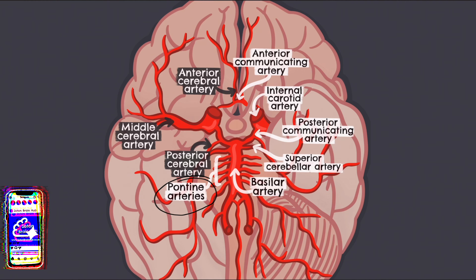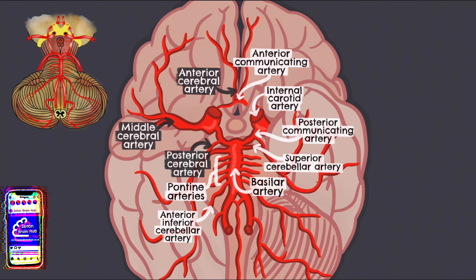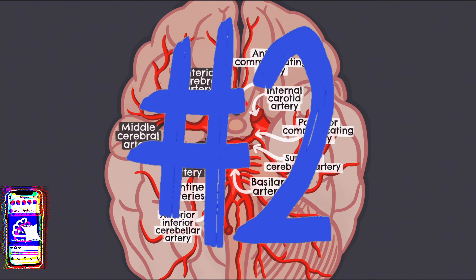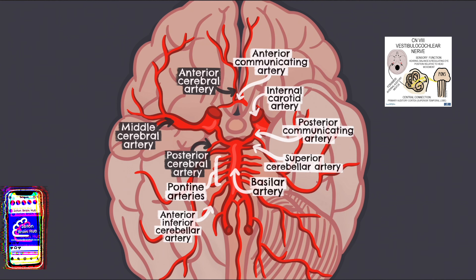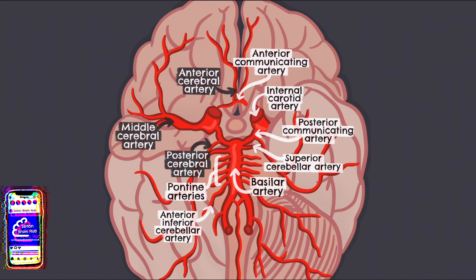Posteriorly and inferiorly to the pontine arteries, we have the anterior inferior cerebellar arteries. These arise from the lowest part of the basilar artery at the junction between the medulla oblongata and the pons. They are the second of the three main arteries supplying the cerebellum and also supply the vestibulocochlear and facial nerves. Occlusion of these arteries can result in lateral pontine syndrome.